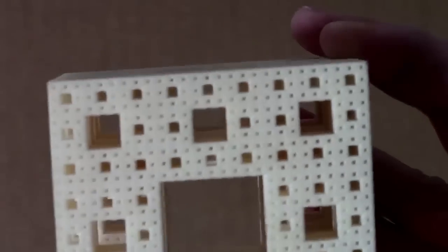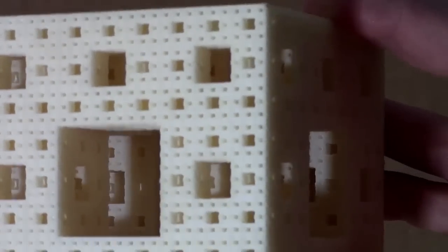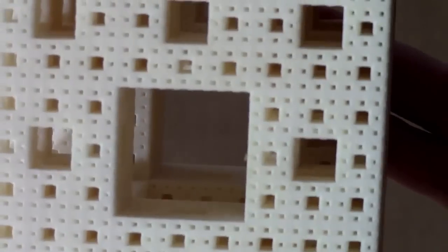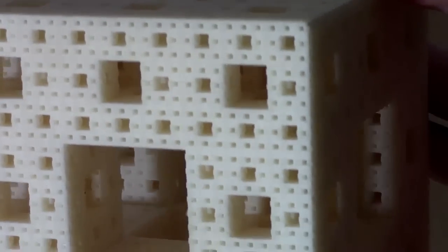I've made some Menger sponge models by 3D printing. The finest one I can make is level four. There are four sizes of holes here, and the smallest ones are right at the limit of what my 3D printer could make.